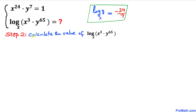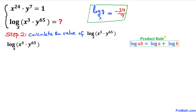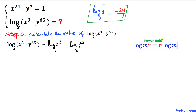Next, let's calculate the value of log base x of x power 3 times y power 65. Applying the product rule, this becomes log base x of x power 3 plus log base x of y power 65. Now applying the power rule, we move the exponents to the front: 3 times log base x of x plus 65 times log base x of y.